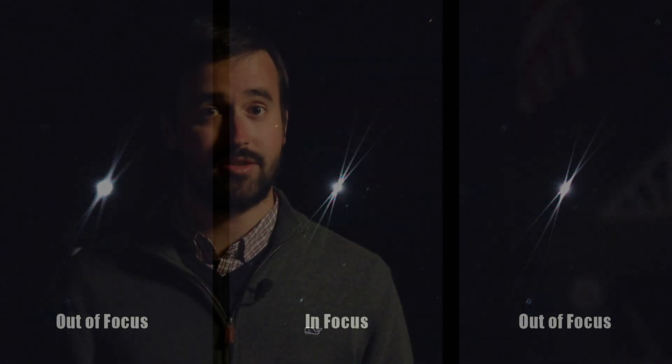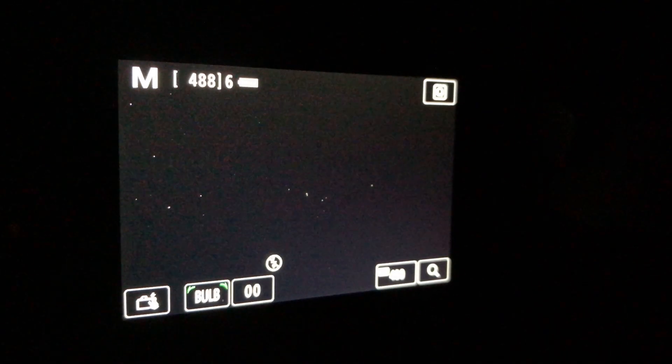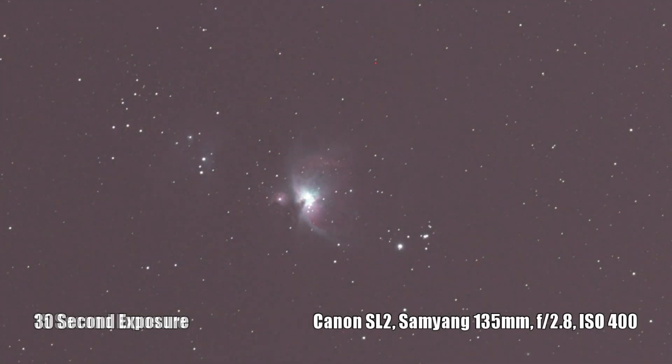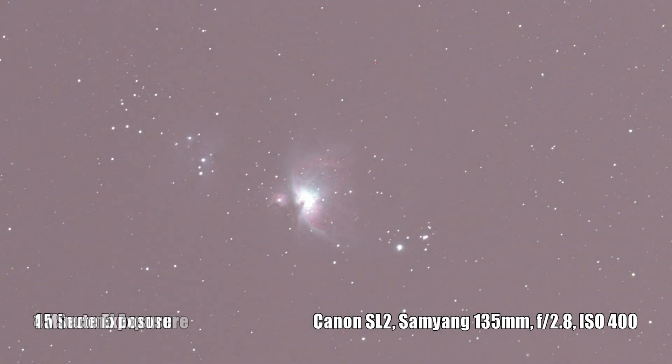Now that our camera is set to RAW and we've adjusted our focus, let's turn our attention to making sure that we get the proper exposure time for our target tonight, which for me is the Orion Nebula. Let's test out different exposures for our light frames by taking a 15 second, 30 second, 45 second, and one minute exposure.